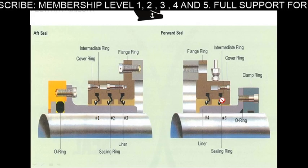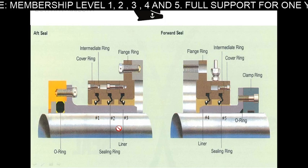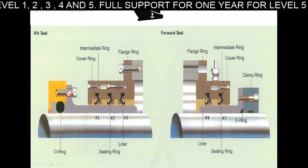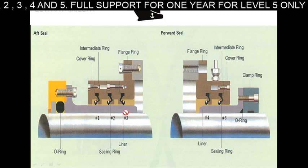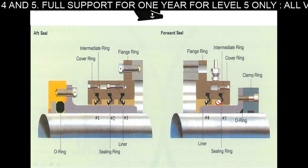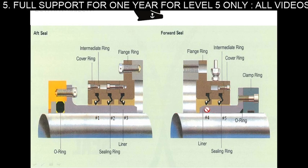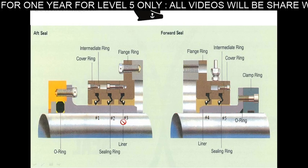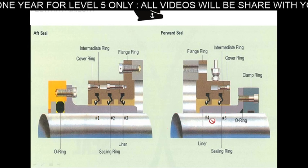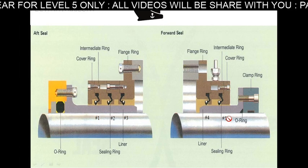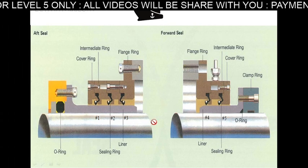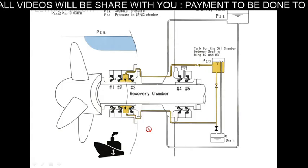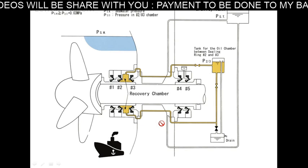Looking at the seal arrangement, the seal looks like this with the liner part. There are seals 1, 2, 3, 4, and 5. This is the general arrangement of the seal.